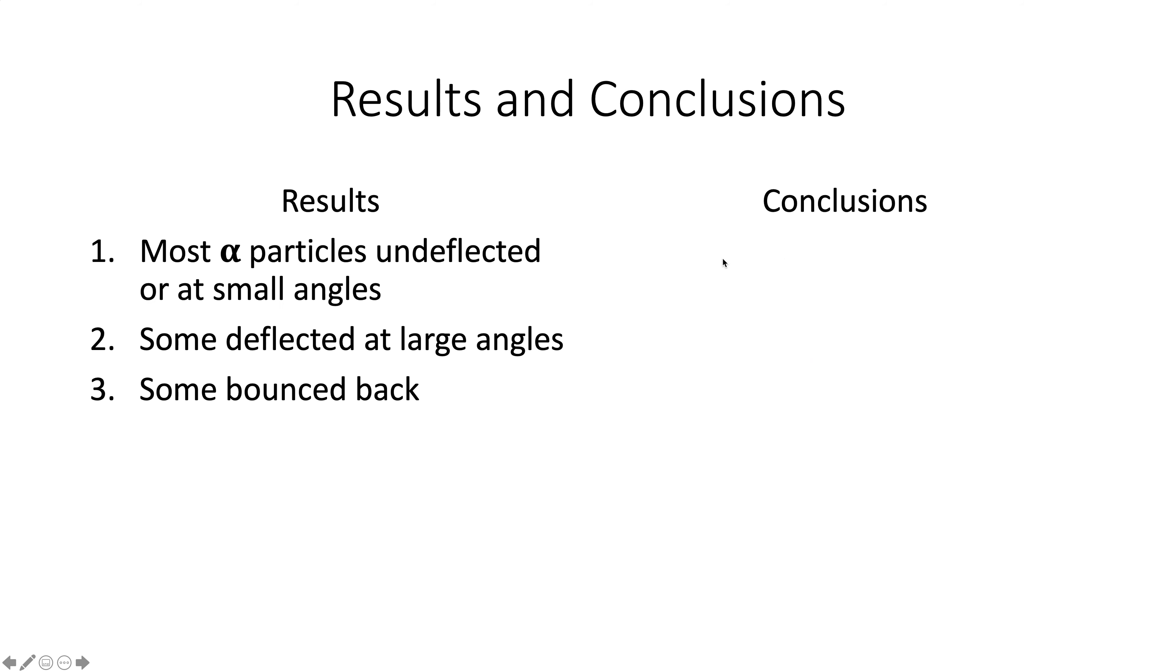That's just a nice diagram. Your textbook has a picture like this. I forget what page it's on. So these are the results, and I'll do the conclusions in a minute. So the results from the diagram, most, not just some, most of those alpha particles were undeflected or deflected at small angles. Okay, not all, but most. That's what we expected. However, some were deflected at large angles, and how many is some? Enough that it's significant, and some bounced back.